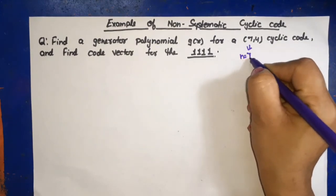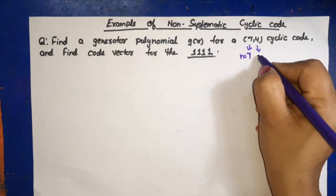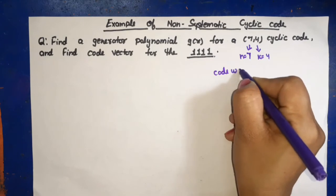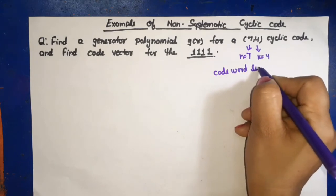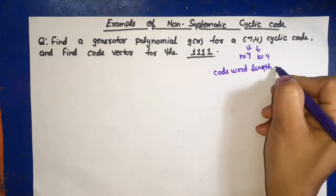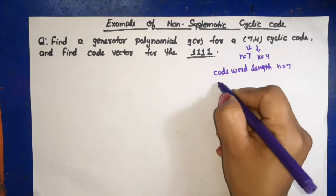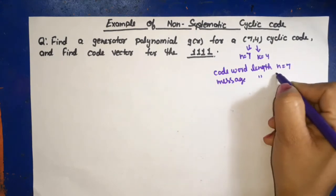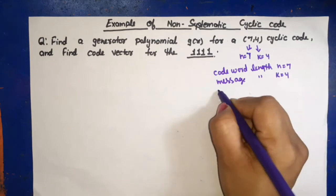So codeword length n is equal to 7, message length small k is equal to 4, parity bits n minus k will be 3.